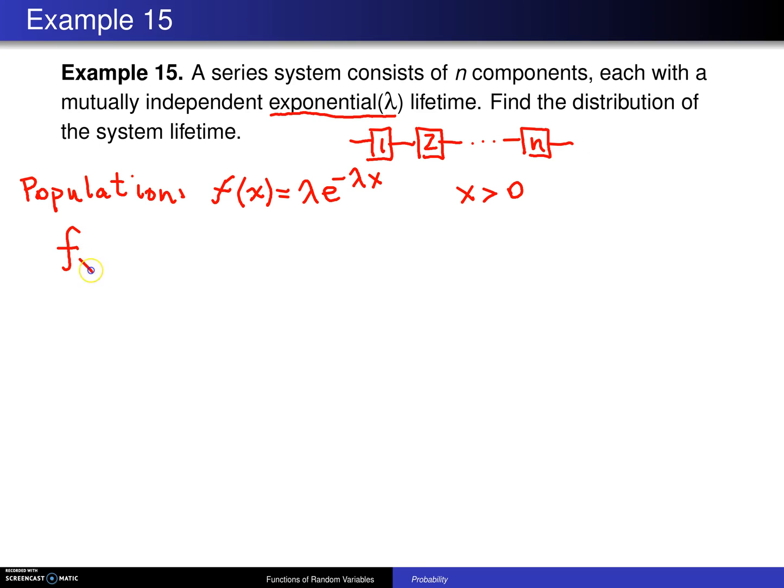That is the first order statistic f_x(1) of x1 will give its distribution. From the previous slide, this will be n times 1 minus the CDF evaluated at the first order statistic x1, raised to the n minus 1 power, times f of x1.